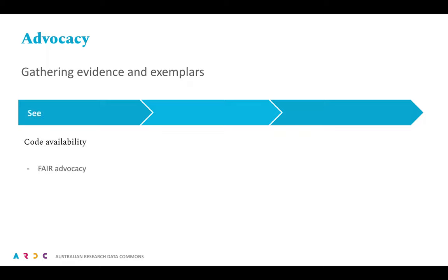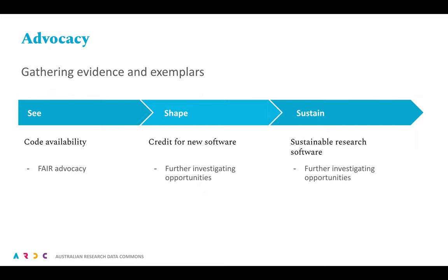For See, we will straightforwardly continue our advocacy for FAIR, but begin to shine a light on FAIR software as well as data. For Shape and Sustain, we are looking particularly to forums like this, and also to our local and national communities for the evidence and exemplars that we can help to communicate across the sector. The agenda consultations have already unearthed some good examples of career progression structures in some organisations. We are going to work these up and spread them to see if we can drive greater uptake.